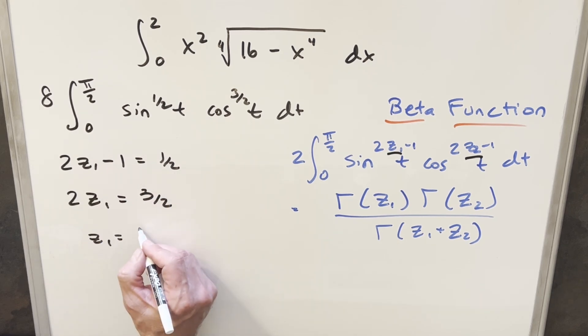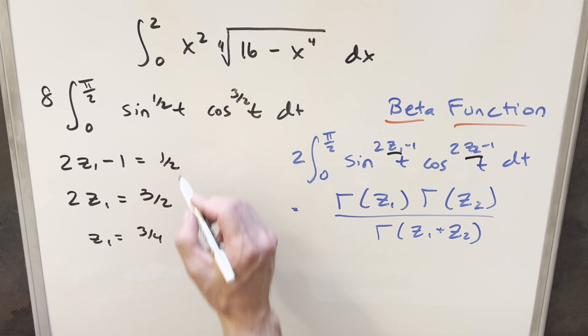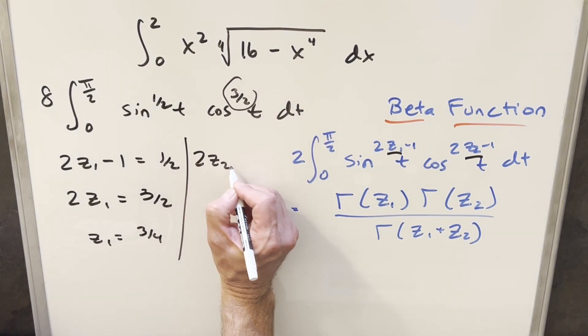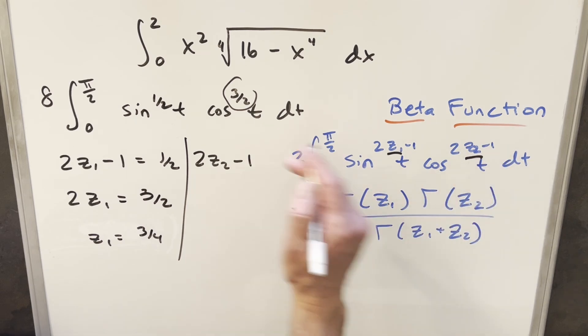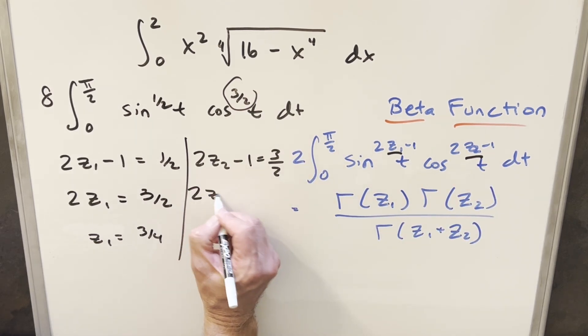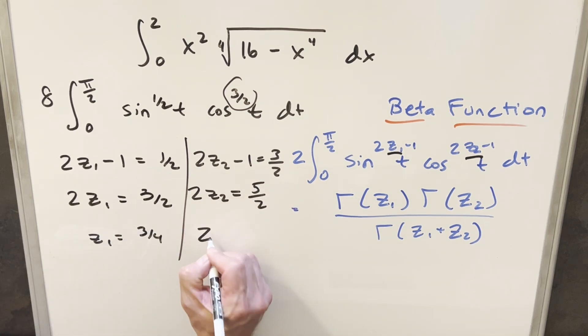And then doing the same thing with our exponent on the cosine, we're saying 2z2 minus 1 using this is going to be equal to 3 halves. Adding 1 on both sides, this is going to be 5 halves, divide by 2 on both sides, and we have our z2 value equal to 5 over 4.